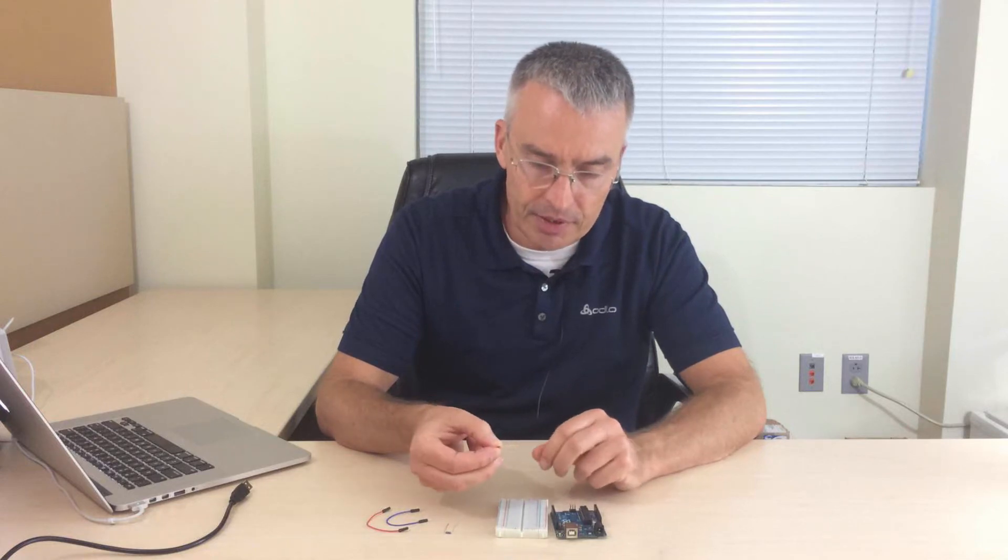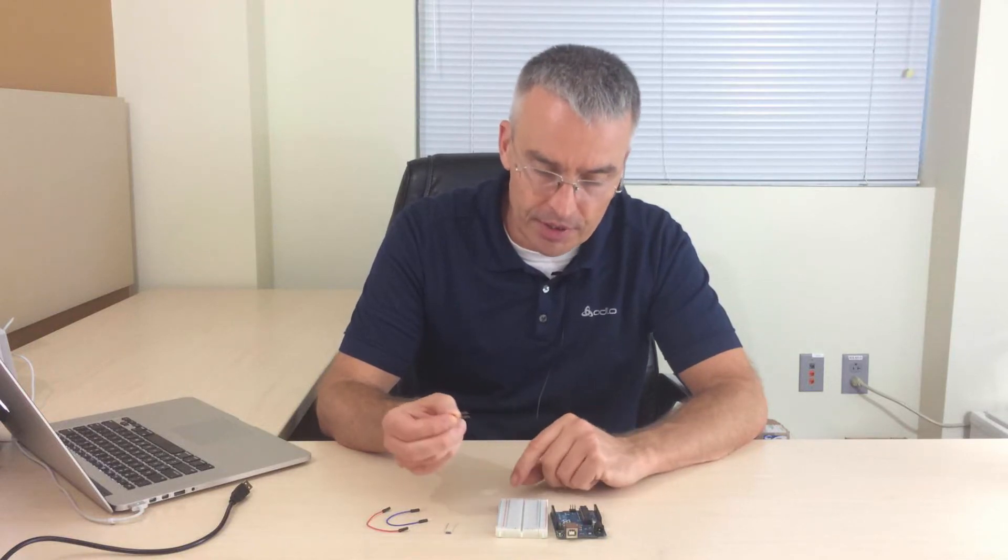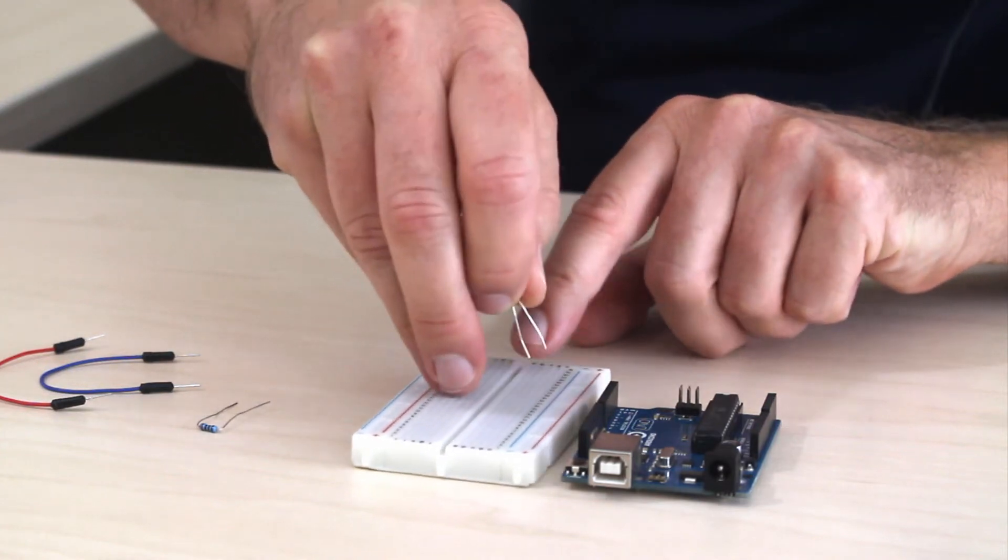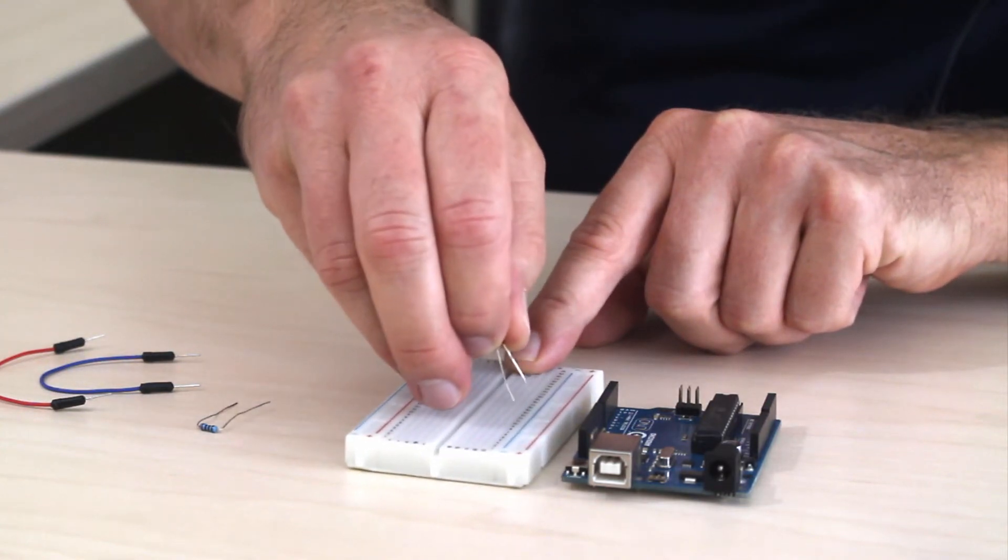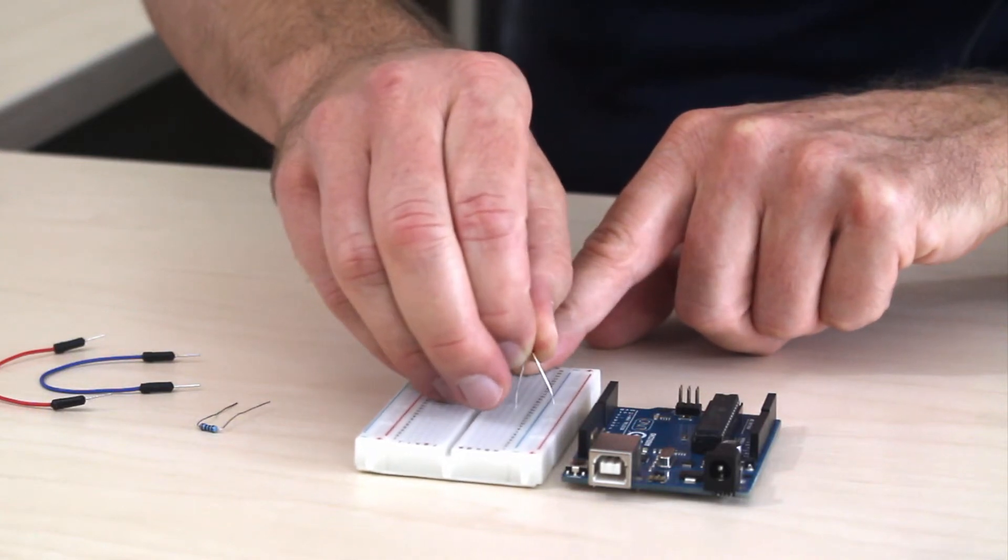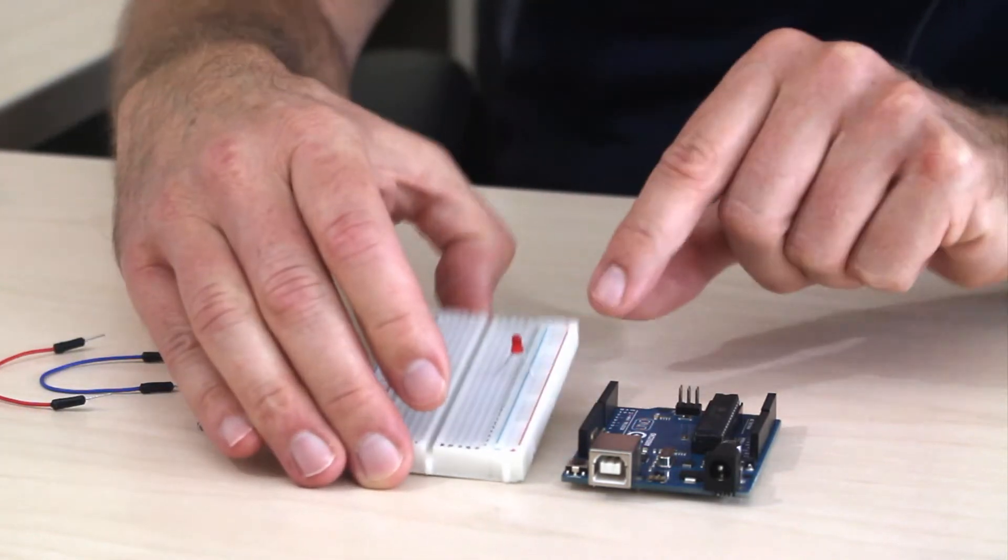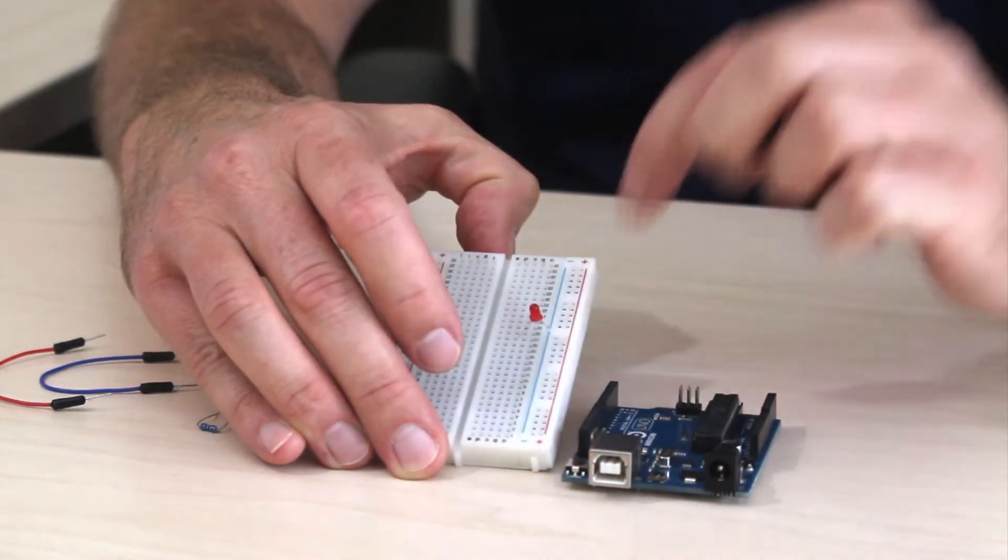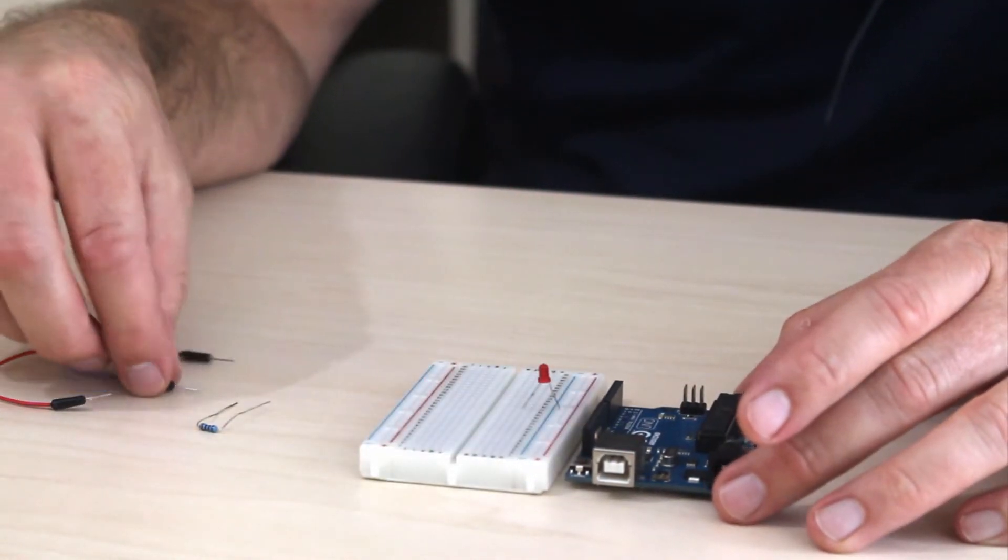If you remember, LEDs are polar, so the longer lead is the positive one. I'm just putting the LED now into the board with the positive end in the central part and the negative end in the negative power rail, the blue power rail. Remember they are all connected next to the blue and red lines.